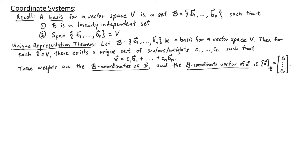Suppose that a set B of vectors b1 through bn is a basis for a vector space V. Then for each vector x in V, there exists a unique set of scalars or weights c1 through cn such that x can be written as the linear combination c1 times b1 summed up through cn times bn. These weights are called the b-coordinates of x, and the b-coordinate vector of x is denoted as x with square brackets and a subscript b, containing the b-coordinates c1 through cn.